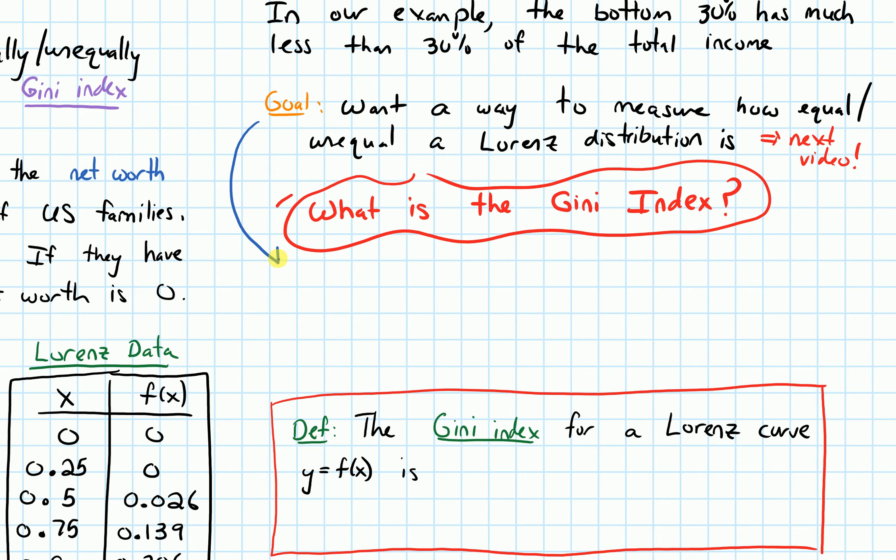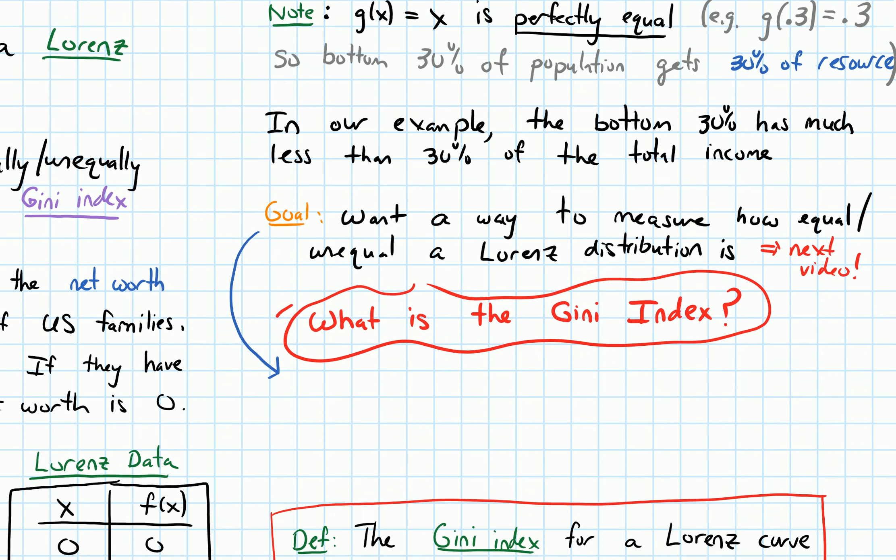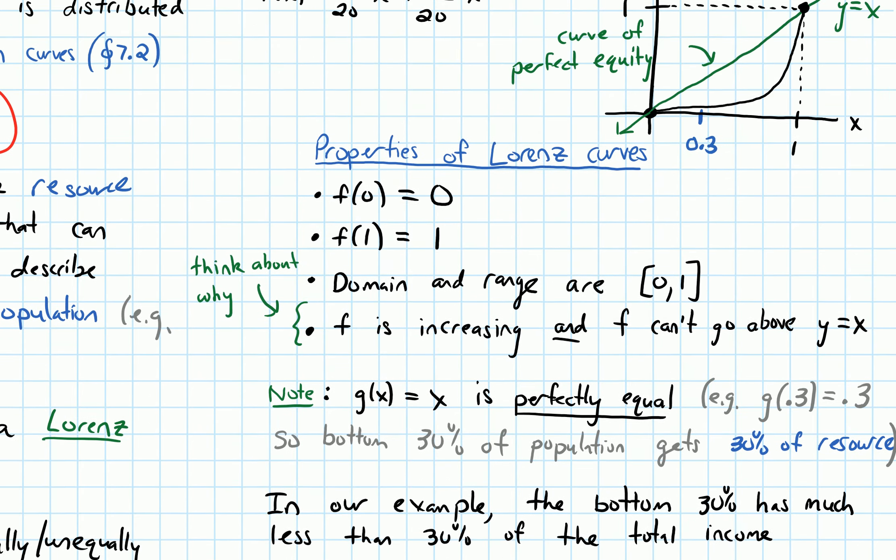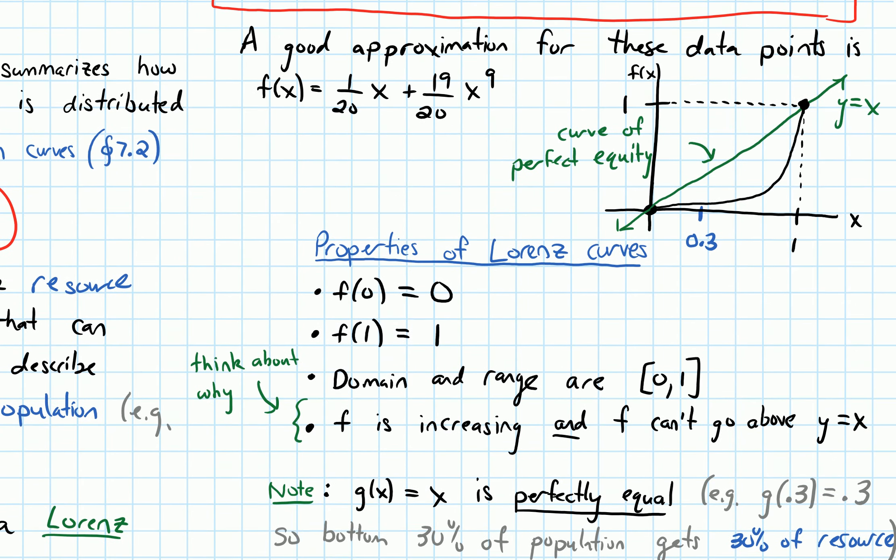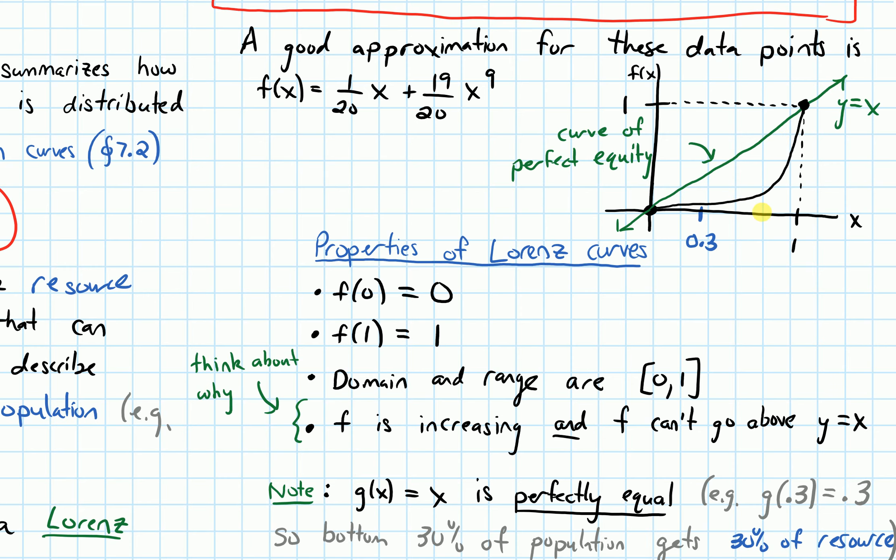We want a way to measure that. When we graphed our Lorenz curve, we compared it to y equals x. Our Lorenz curve was f(x) = (1/20)x + (19/20)x^9 in this example. We want a way to measure how equal or unequal of a distribution that represents. And we know that y equals x would be perfectly equal—that's the curve of perfect equity.